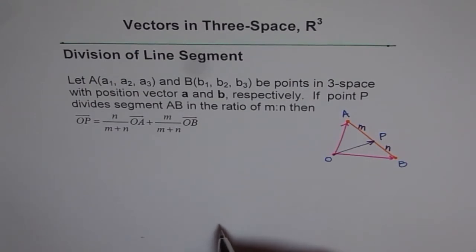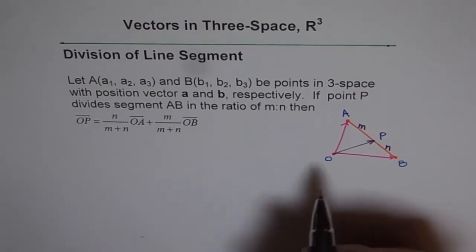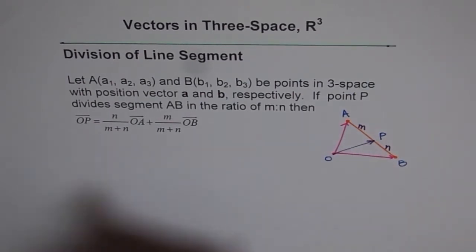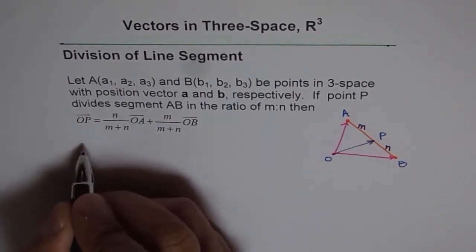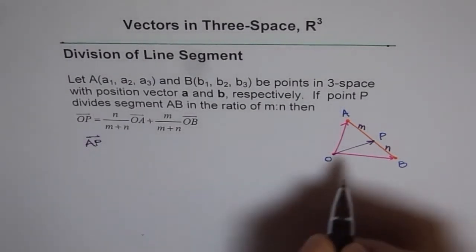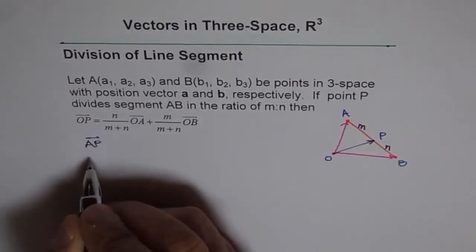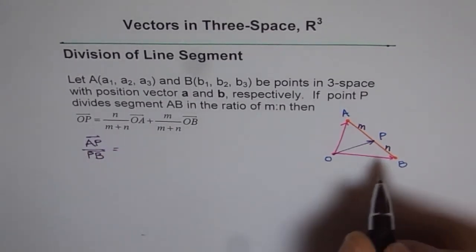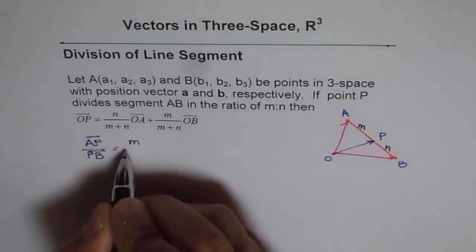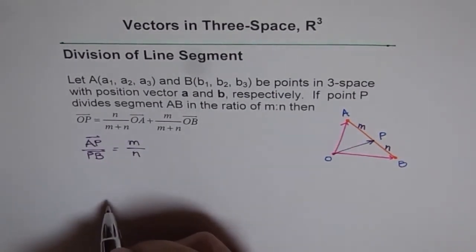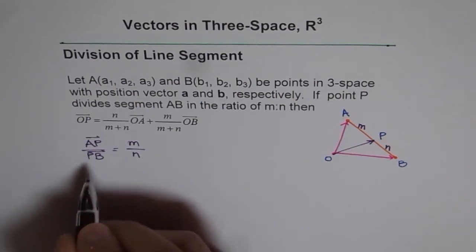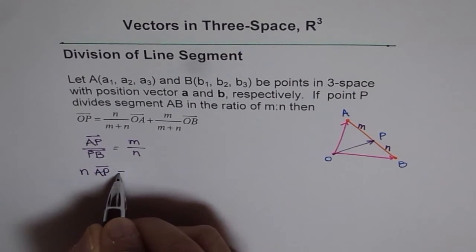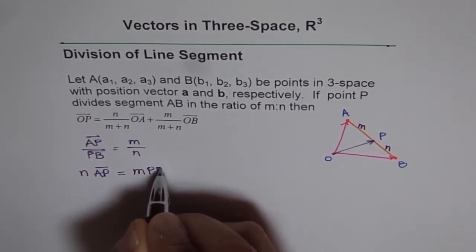Now to prove this, we can start with saying that AP over PB, the ratio of these two sides is given to us as we can say AP over PB is given to us as M over N. So we can cross multiply and we can also write this as N times AP is equal to M times PB.